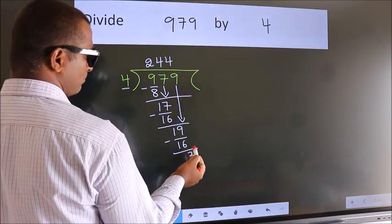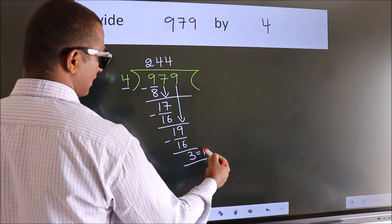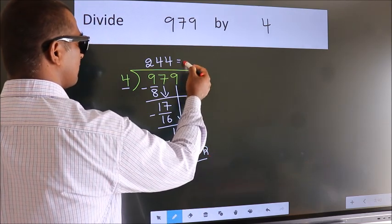No more numbers to bring it down. So we stop here. This is our remainder. This is our quotient.